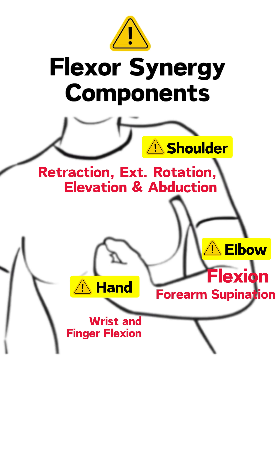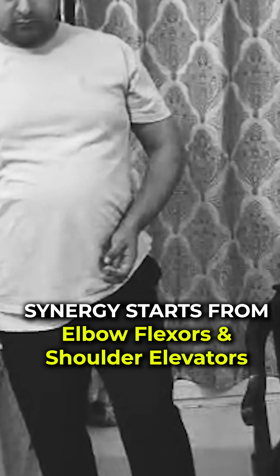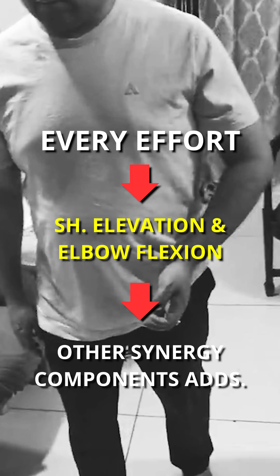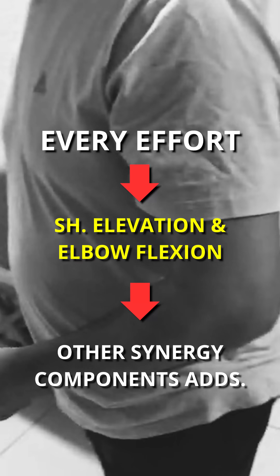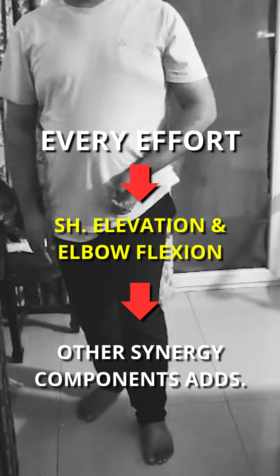Another important thing to note is that upper limb flexor synergy movement is typically initiated by either elbow flexion or shoulder elevation. The patient initiates the flexor synergy by recruiting the elbow flexors and shoulder elevators, and the rest of the muscles of the synergy follow. So every time effort to initiate elbow flexion occurs, it will be accompanied by activation of the rest of the muscles in that synergy.